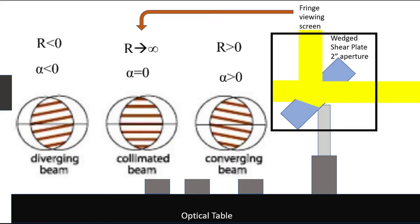The purpose for using a shear plate in general is to see if your system is collimated or not, or whether it's diverging or converging.